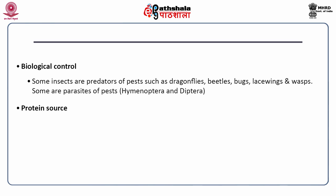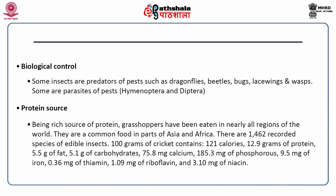Insects are also a rich source of protein. Grasshoppers have been eaten in nearly all regions of the world and are a common food in parts of Asia and Africa. There are 1,462 recorded species of edible insects. For example, 100 grams of cricket contains 121 calories, 12.9 grams of protein, 5.5 grams of fat, 5.1 grams of carbohydrate, 75.8 mg calcium, 185.3 mg phosphorus, 9.5 mg iron, 0.36 mg thiamine, 1.09 mg riboflavin, and 3.1 mg niacin — illustrating how nutritious insects are across the world.